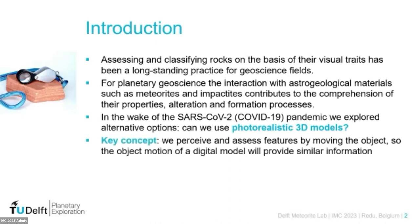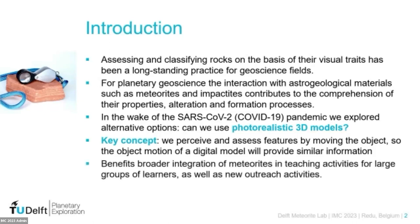The key concept with these photorealistic 3D models is that we can still have a key learning approach where you can rotate an object around — that's really the key property of why a 3D model in a virtual environment works for conveying information. It conveys much more than a static 2D photo because you can turn it around, zoom in, manipulate it, and follow your curiosity. With this idea in mind, we also saw broader possibilities to integrate meteorite materials, impact breccias, and other planetary analogues into our teaching, as well as outreach activities.